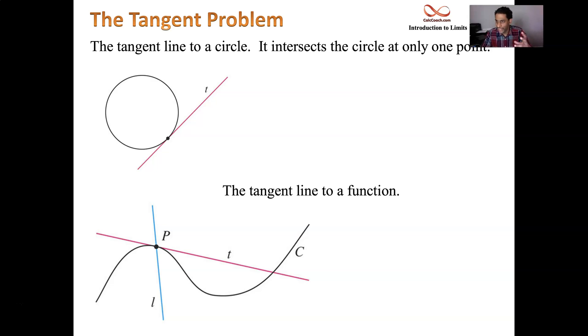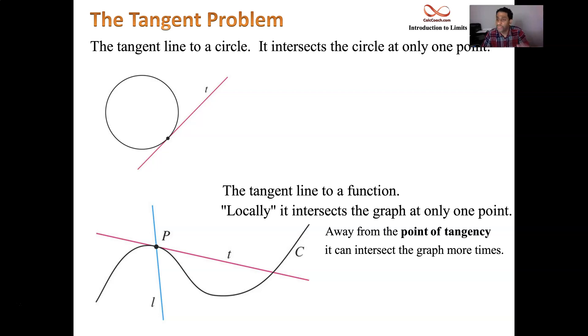The issue is that for a circle, it can only touch at that one point. It can't touch any place else, but for a function it's perfectly fine for the tangent line to later on basically touch the graph at some other point.